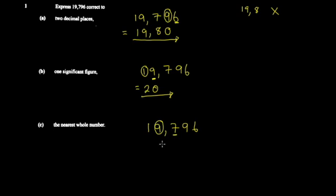Rounding up the 9 gives ten, so it becomes zero and you carry the one, giving 20. This communicates one significant figure but also communicates nearest whole number, so the answer is 20.